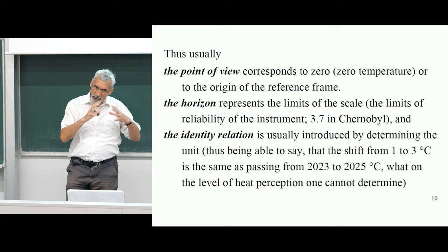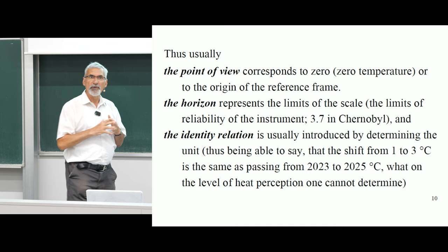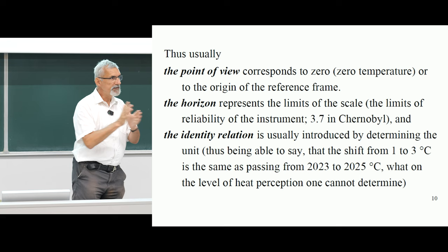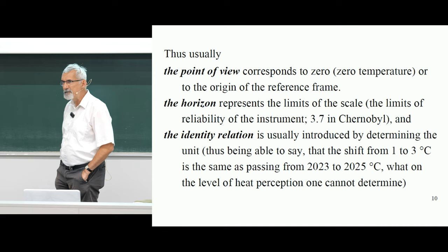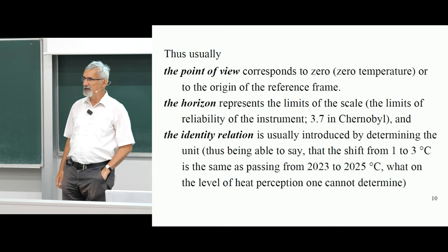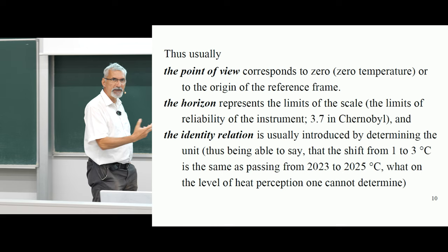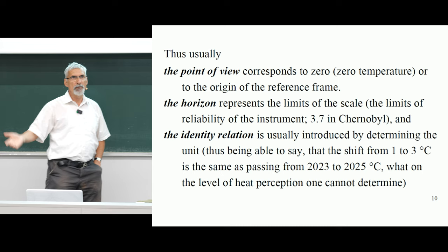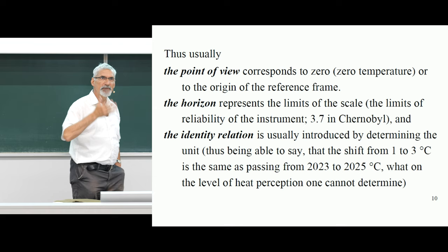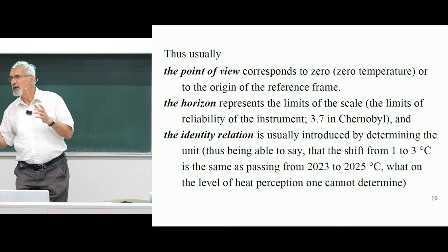Then there is the horizon — representing the limits of the scale. I don't know whether everybody saw the movie about Chernobyl, that four or five part series. When the reactor blew up, they were measuring radiation and came up with a value of 3.7. They were very happy because it seemed safe. But it was the limit of the measurement of the detector — they could measure only till 3.7 Roentgen per hour. So they were all happy that nothing was happening. The real radiation was thousands of Roentgen. Because the scale only reached 3.7, that's all they had.